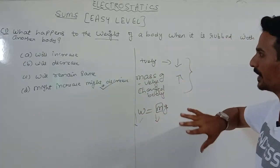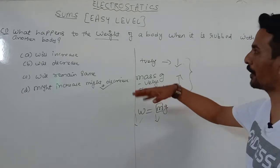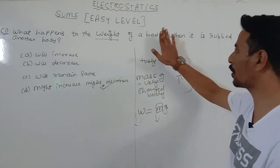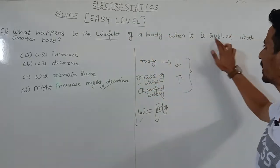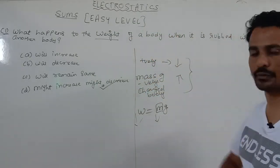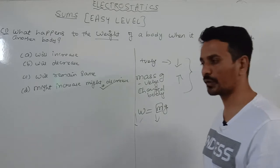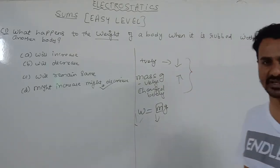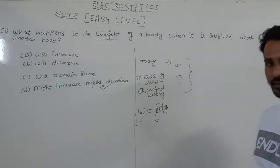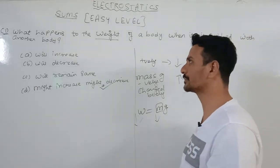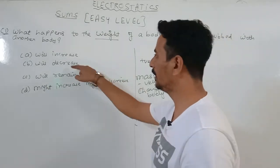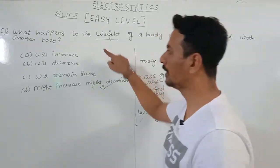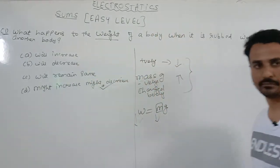However, if the same MCQ asks what happens to the weight of a glass rod when it is rubbed with a silk cloth, the glass rod acquires positive charge, and for a positively charged body the weight will decrease, so the answer will be decrease.